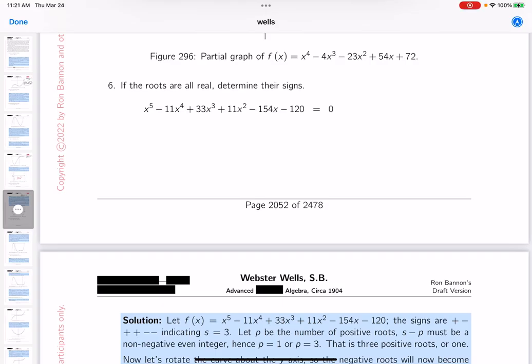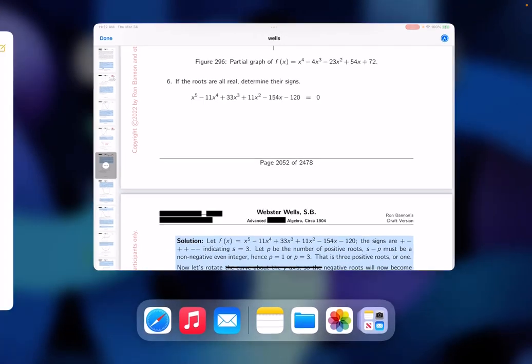Okay, for number six, the fifth-degree polynomial, we'll go to the whiteboard. We'll discuss using Descartes' rule of signs and also something about the general shape of the curve. Let's go to the whiteboard.